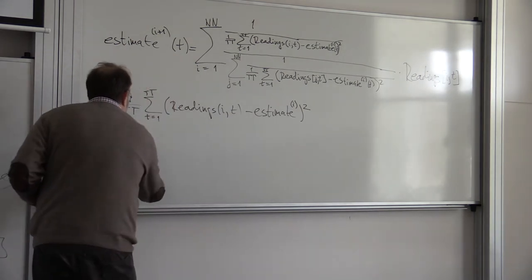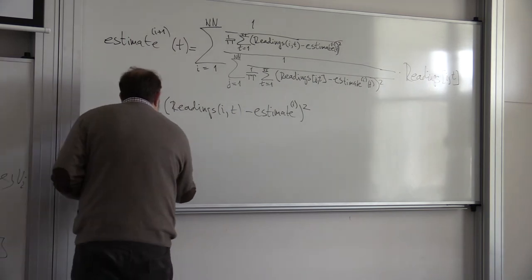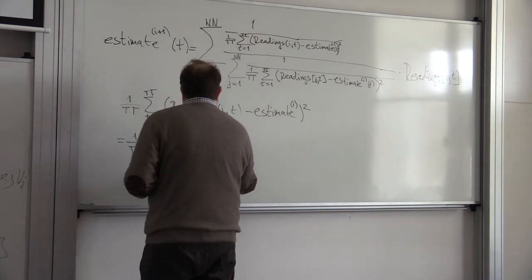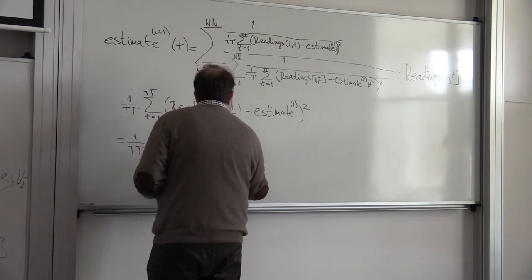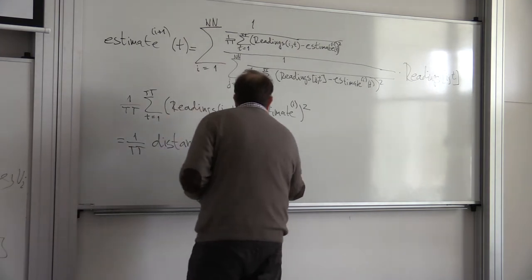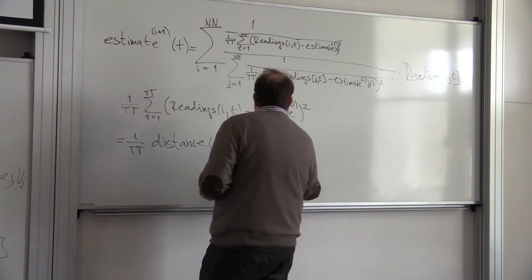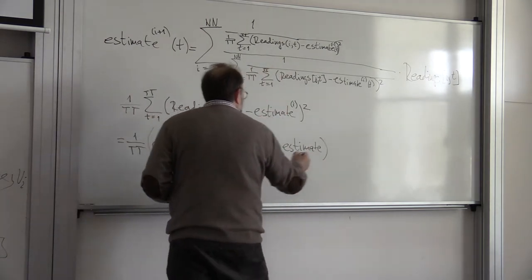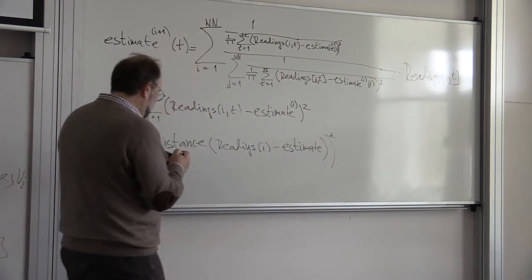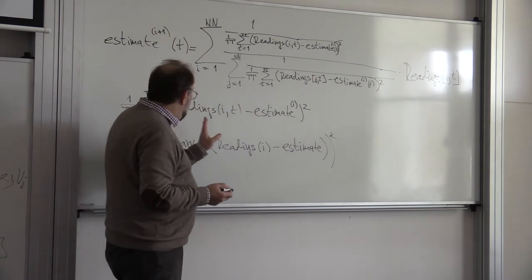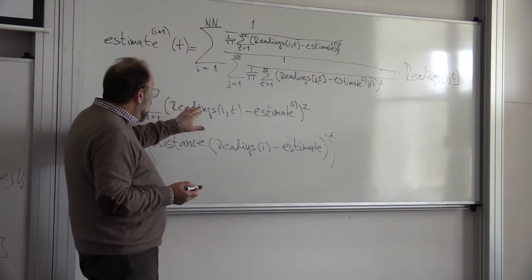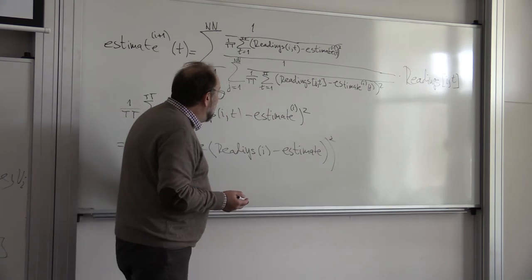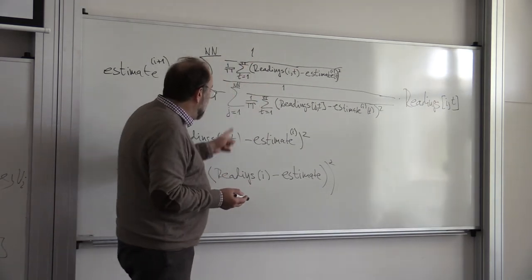What is this? This is equal 1 over t, and this is distance, Euclidean distance squared between the readings of i and estimate. So the distance, Euclidean distance squared. It simply means the distance of the readings of that sensor to the current value of the estimate.